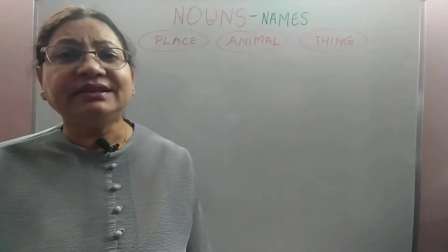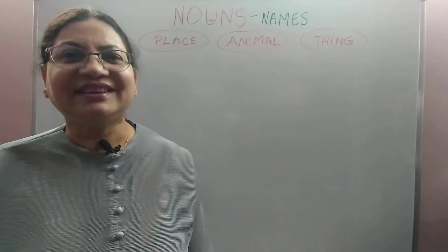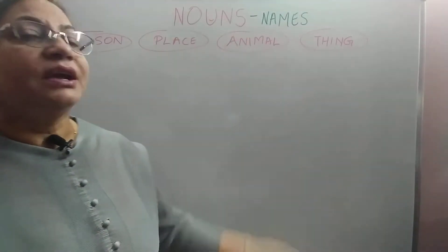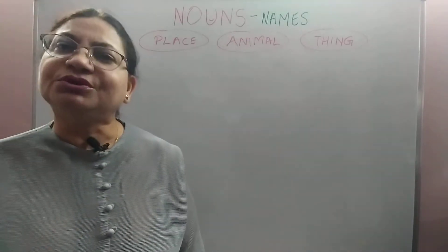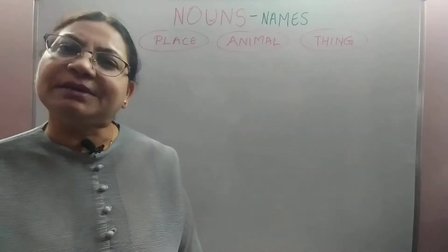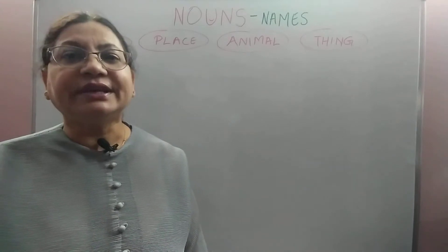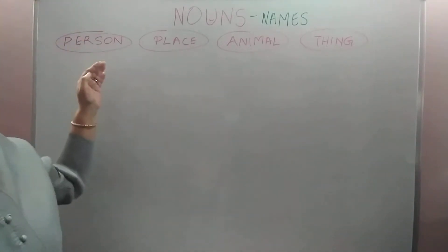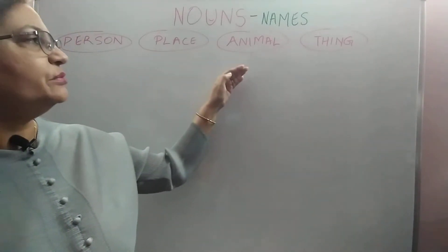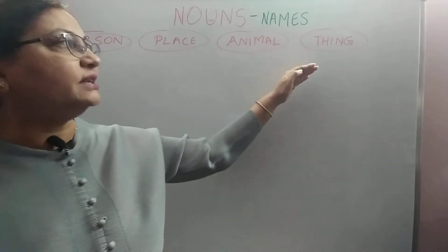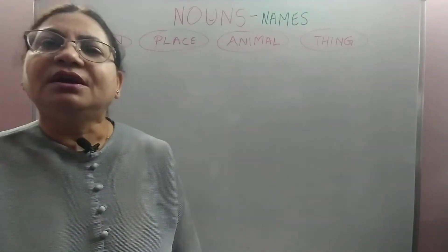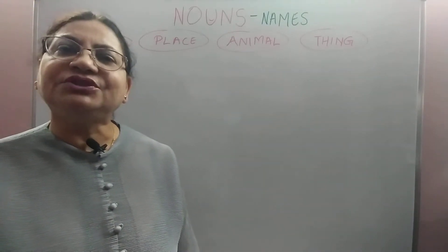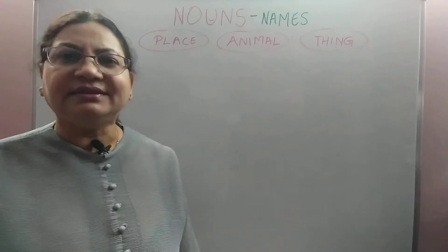What exactly are nouns? Nouns, friends, are names. Nouns are also called naming words. Nouns can be the names of persons, places, animals or things. Actually, nouns are names of just about anything.